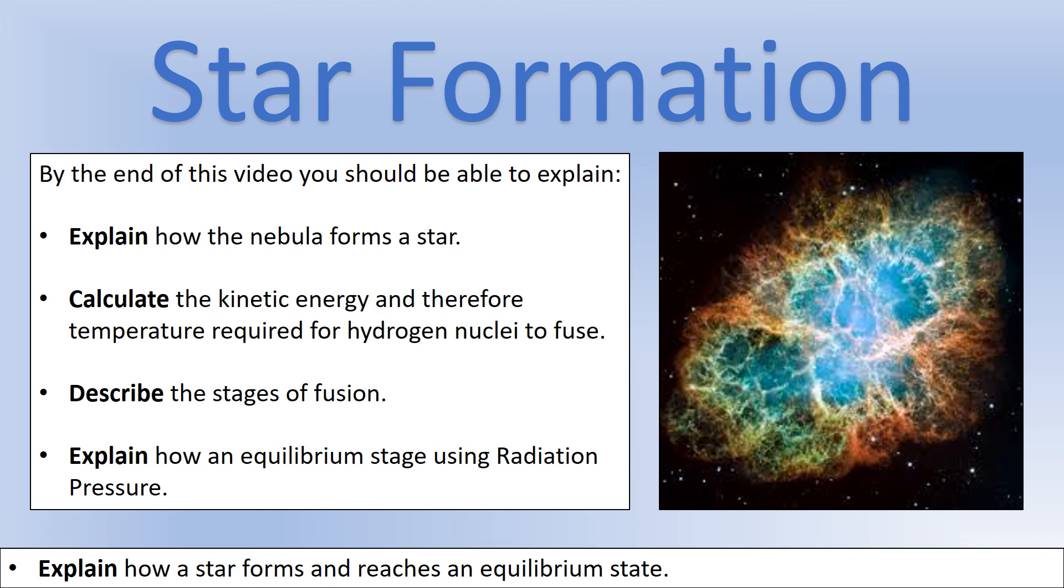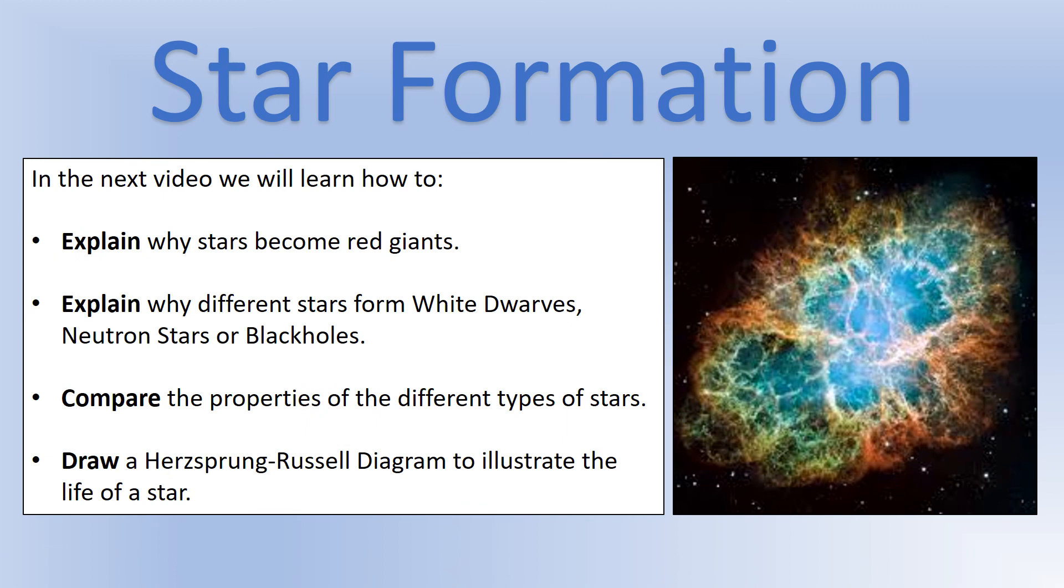The next video, I'm going to look at how stars end. We've looked at how they form. We're now going to look at what happens when they run out of fuel and the various stages that they go through and the different types of stars that we get from the death process. We'll finish off by looking at the life cycle of a star on something called a Hertzsprung-Russell diagram. Thank you very much for taking the time to watch. If you have any questions, please feel free to comment on this video.